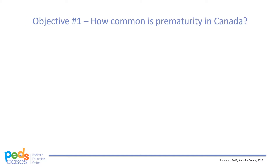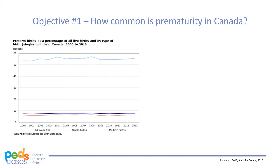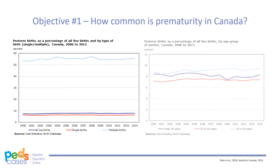Preterm birth is the leading cause of morbidity and mortality in children younger than 5 years around the world. In Canada, preterm birth occurs in about 8% of total pregnancies and accounts for nearly two-thirds of infant deaths, as well as increased morbidity later in the life course, as demonstrated by increased rates of adult-onset chronic disease. There are slightly more male preterm births than female preterm births, with 8.3% of male births being preterm compared to 7.3% of female births. Preterm birth is much more common in multiple pregnancies, and most prevalent among mothers aged 35 to 49.